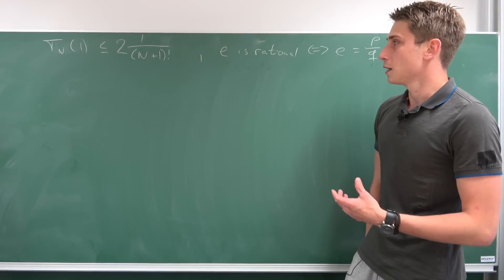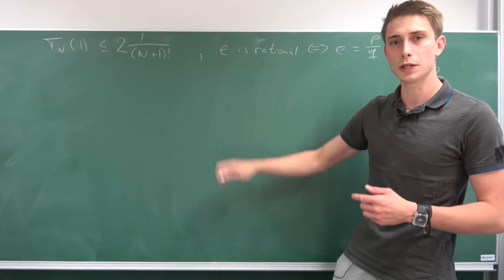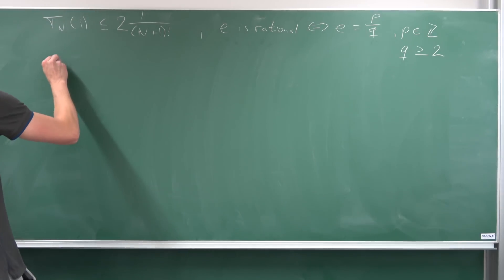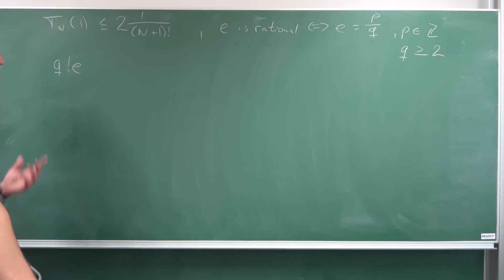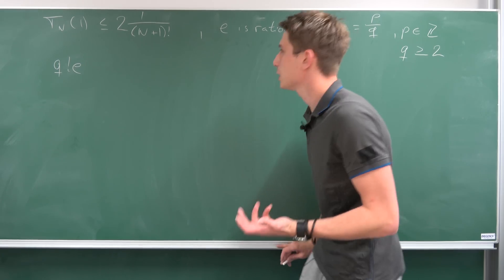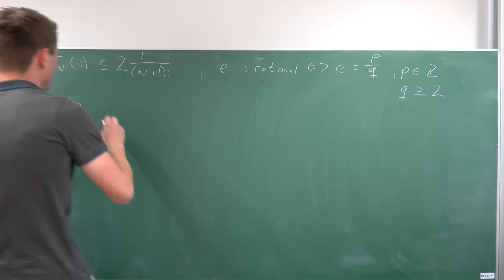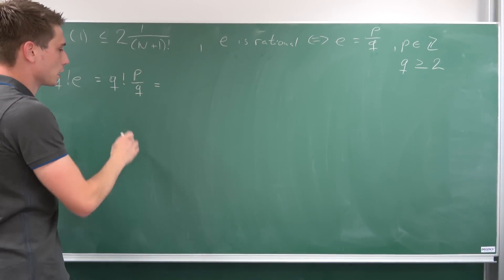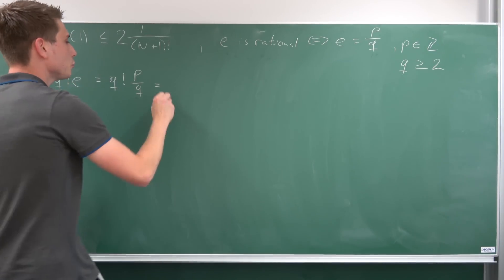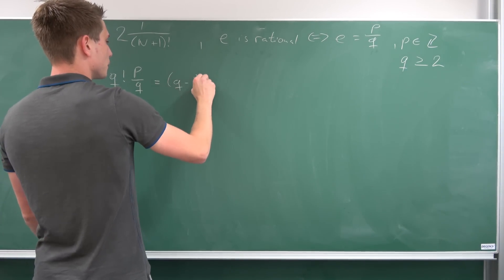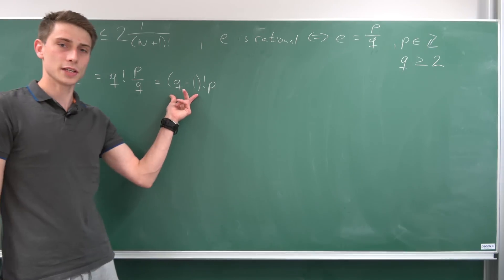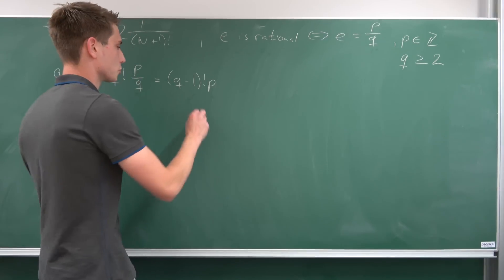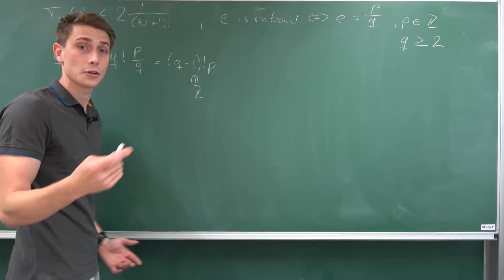So q is going to be greater or equal to two without loss of generality. What about multiplying q factorial by e? That's just what we are going to do — that's the main proof, that's the classical one. So q factorial times e — that's what we want to explore. We can use the definition of e and plug it in. So q factorial times p over q — well, q and q factorial cancel out and we end up with q minus one factorial times p. This thing is element of the integers and this thing is element of the integers, so the product is also going to be element of the integers.